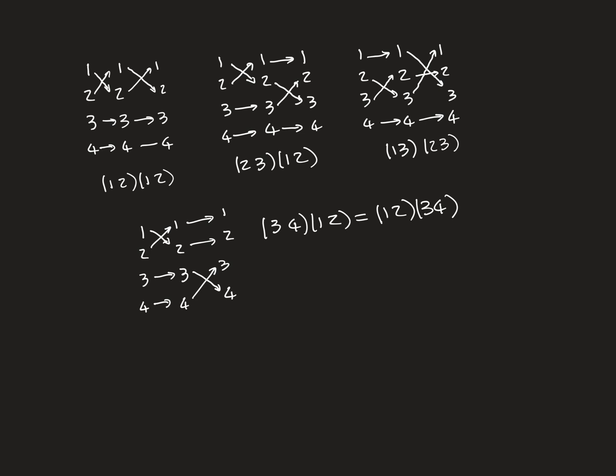Either they completely and utterly overlap, which is what we have here, where the two transpositions are the same thing. So here we have (1,2) composed with itself — it completely overlaps. And of course, they will compose to give the identity; they obliterate each other.